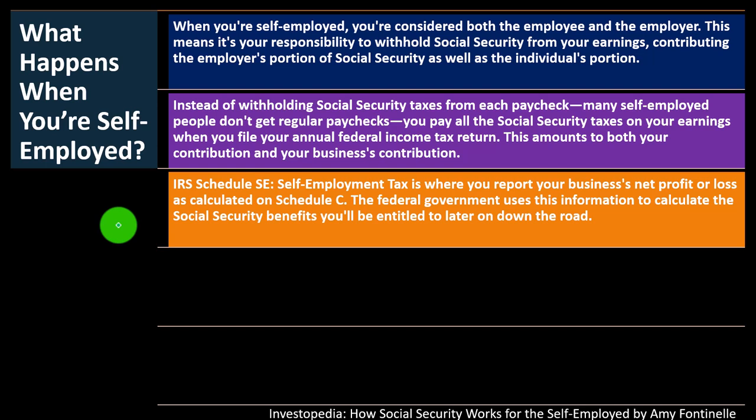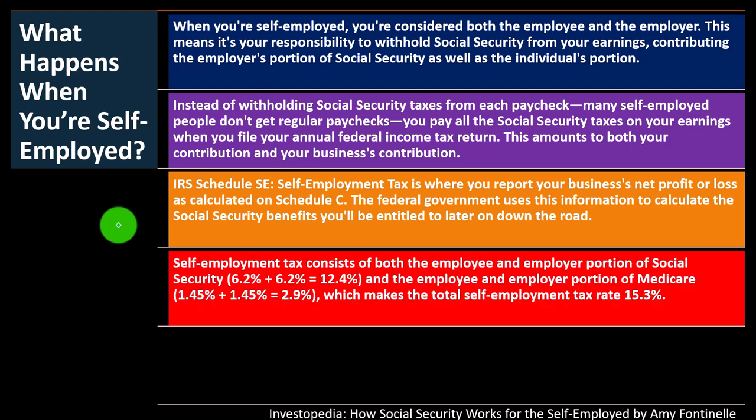IRS Schedule SE, self-employment tax, is where you report your business net profit or loss as calculated on Schedule C. The federal government uses this information to calculate the Social Security benefits you'll be entitled to later on down the road. Self-employment tax consists of both the employee and employer portion of Social Security — that's 6.2% employee plus 6.2% employer, making the 12.4% rate that's paid.